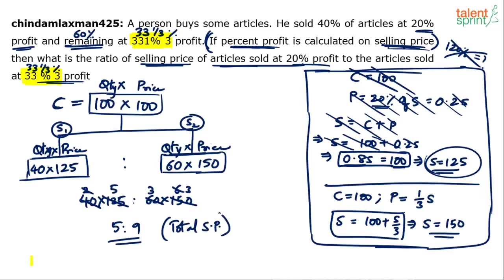There could also be a case where he is asking only for the per-article selling price: 125 and 150, giving an answer of 5 : 6. He says 'ratio of selling price of the article sold at 20% profit' — is he referring to total price or price of each article? If each article: 125 to 150, which is 5 : 6. But assuming it's about total articles, 40 × 125 to 60 × 150 gives 5 : 9.